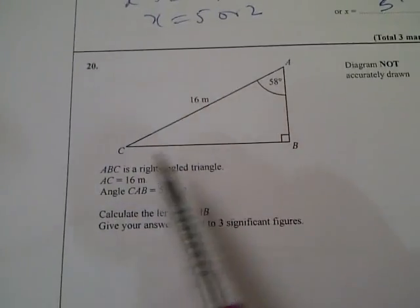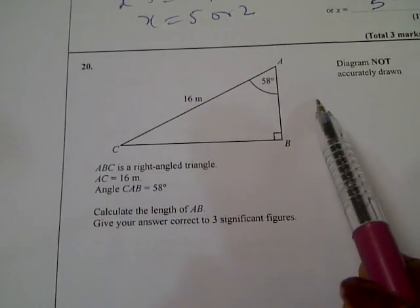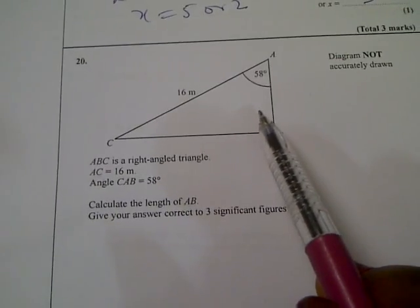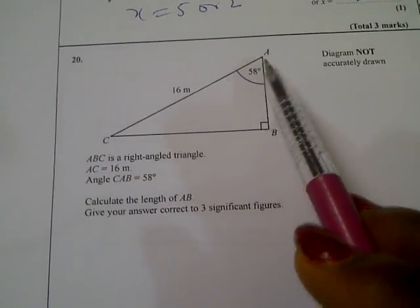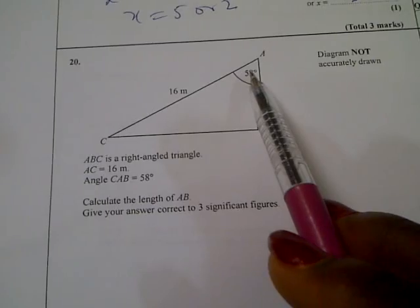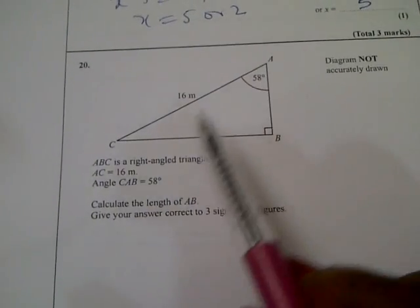Question number 20 says ABC is a right angle triangle. AC is 16 meters and angle CAB is 58 degrees. Calculate the length of AB.